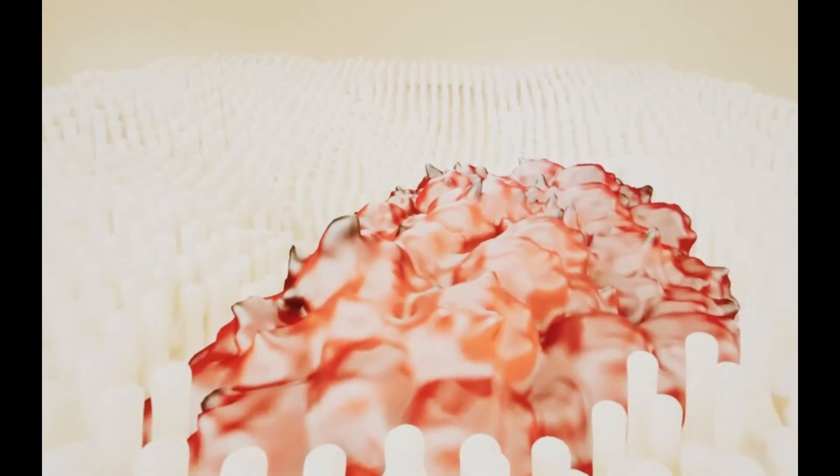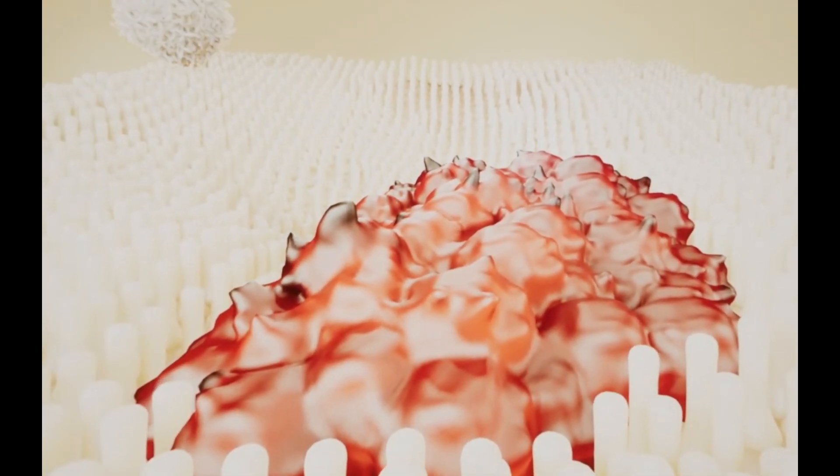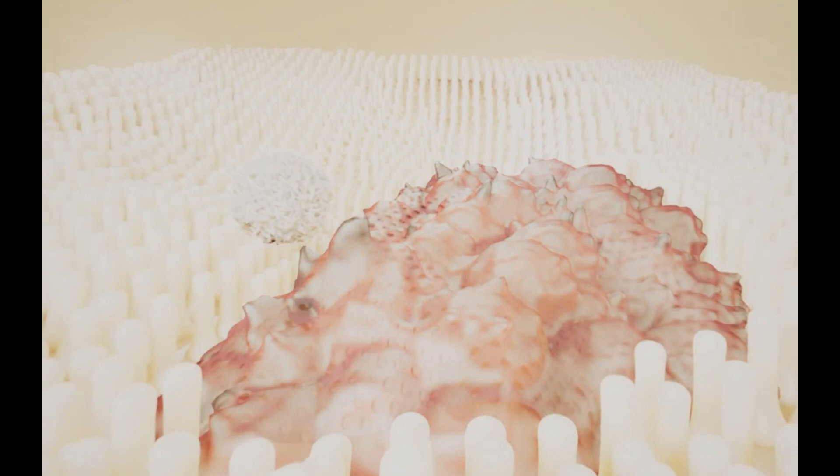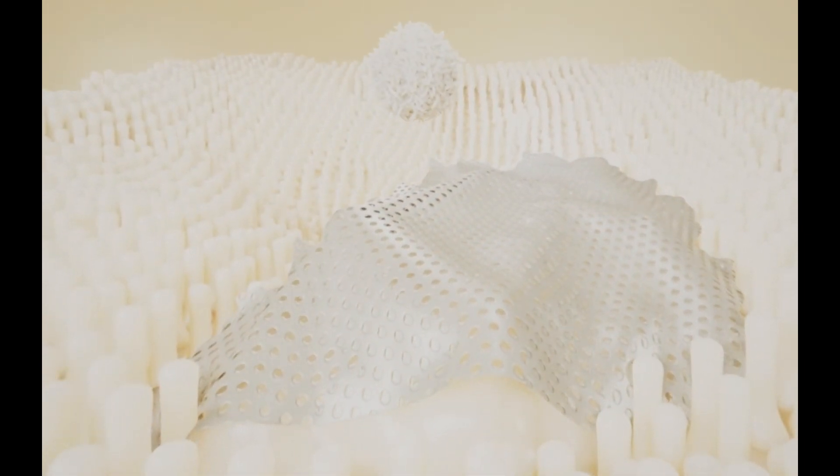But these mutated cancer cells have a superpower of their own, an invisibility cloak. This makes them undetectable to your own T-cells. It's the cellular equivalent of switching the lights off, so they simply can no longer be seen.